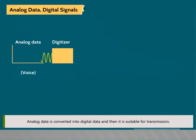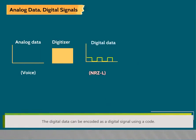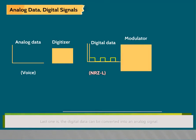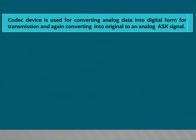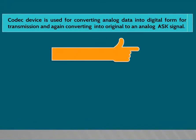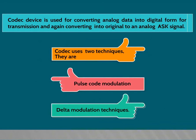Analog data is converted into digital data for suitable transmission. The digital data can be transmitted using NRZL, or encoded as a digital signal using a code, or converted into an analog signal. A codec device is used for converting analog data into digital form for transmission and converting it back to analog. Codec uses two techniques: Pulse Code Modulation and Delta Modulation.